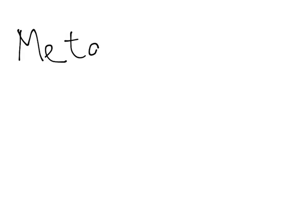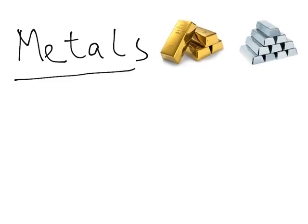First, we're going to talk about the properties of metals. A good way to picture these properties is to show two examples of very common metals, which are gold and silver — gold on the left and silver on the right.